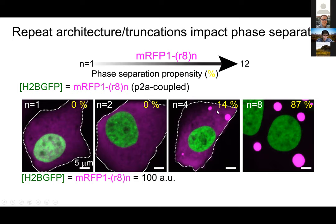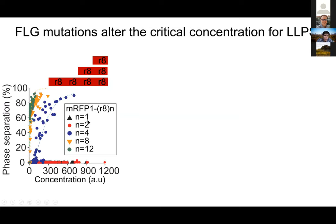Here only 14% of the signal is phase-separated; here basically the entire signal is. When we do this over a range of concentrations — concentration on the x-axis, different cells expressing different levels — for n=1 (black) and n=2 (red), basically no cell shows signs of phase separation even at high expression. Once you go to n=4, some cells at high expression show strong signs of phase separation. The steepness of this transition increases as you go to n=8 and n=12. For proteins as large as those in humans (10–12 repeats), phase separation is very likely to occur at very low concentrations.